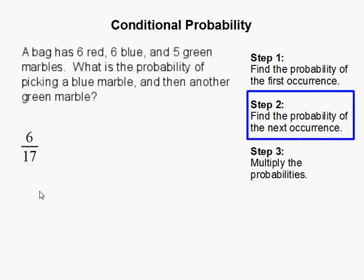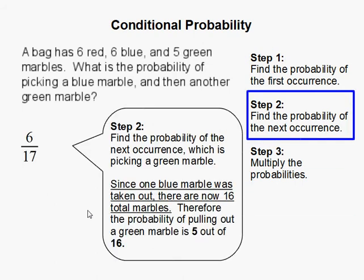Step 2: Find the probability of the next occurrence, which is picking a green marble. But note, since 1 blue marble was taken out, there are now 16 total marbles. Therefore, the probability of pulling out a green marble is 5 out of 16.